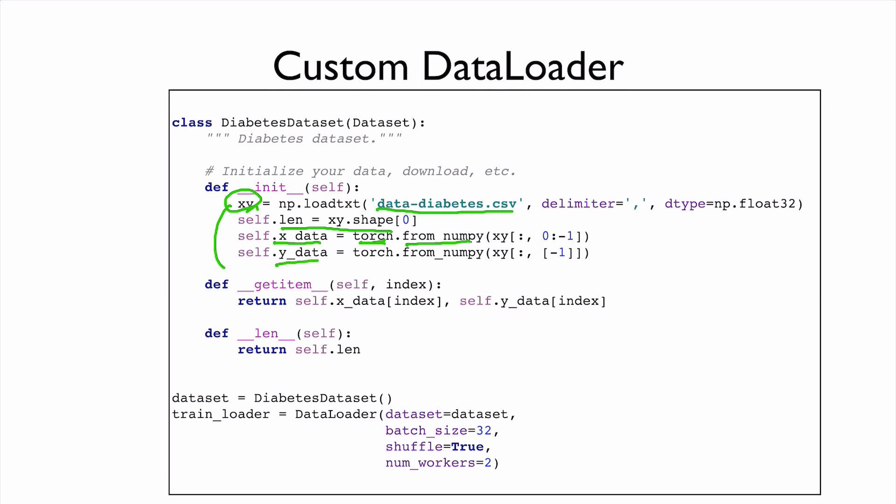This is our initialization for the data. And then getItem, basically for given index, we return this item, x_data and then y_data. And then length, we just return our length.